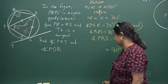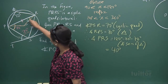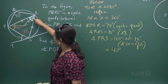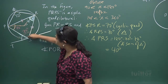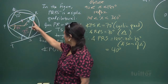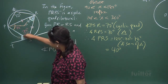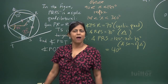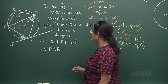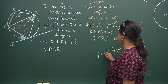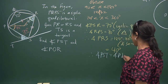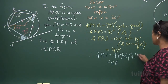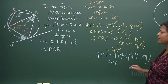Now PRS is 40 degrees, and looking at the chord and tangent, by alternate segment theorem: angle PST equals angle PRS equals 40 degrees. Reason: alternate segment.